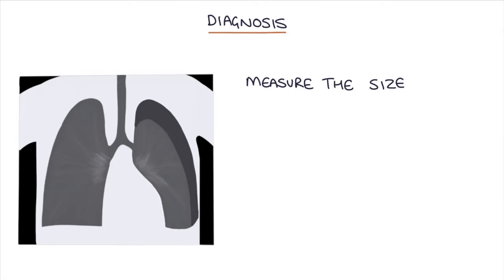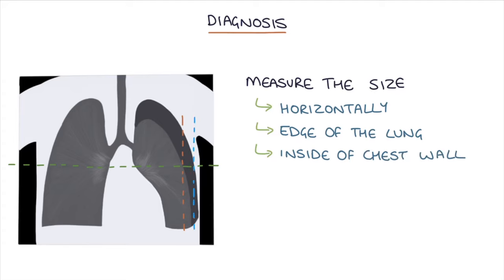You can measure the size of a pneumothorax on a chest x-ray according to the BTS or British Thoracic Society guidelines from 2010. This involves measuring horizontally from the edge of the lung to the inside of the chest wall at the level of the hilum. This will give you the size of the pneumothorax.